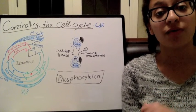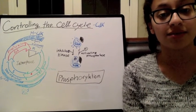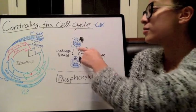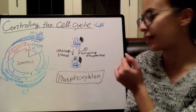So, another way to regulate CDK activity is through phosphorylation. Let's look at these two CDKs over here. This one has a cyclin. It's active. We're used to that.